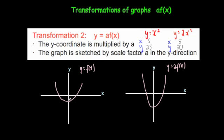So what that means is, if you had a point here and you multiply the heights by 2, it would go twice as far, so it would go down to here. If you had these heights and multiplied them by 2, it would go up. So the graph is stretched by a scale factor of whatever the number in front of the function is.